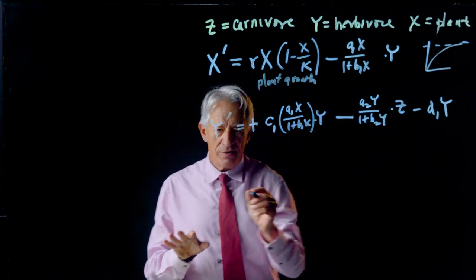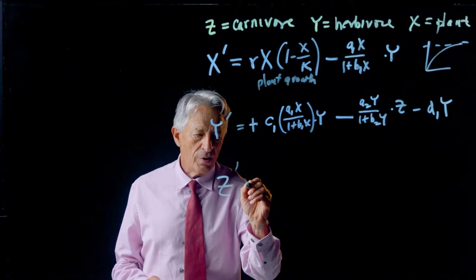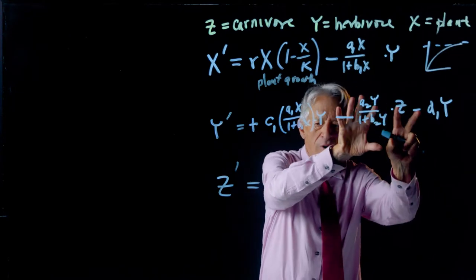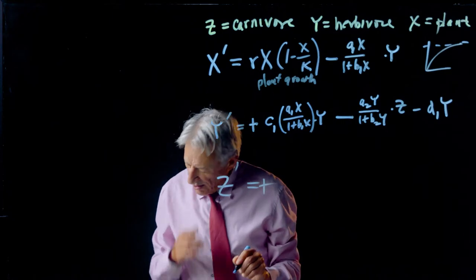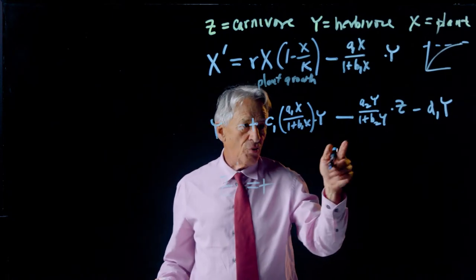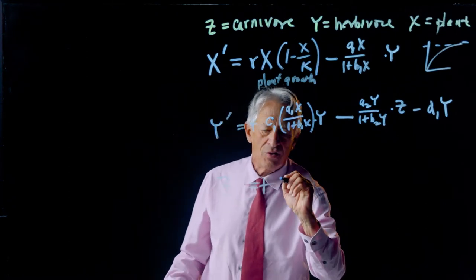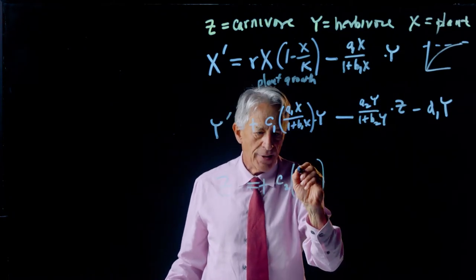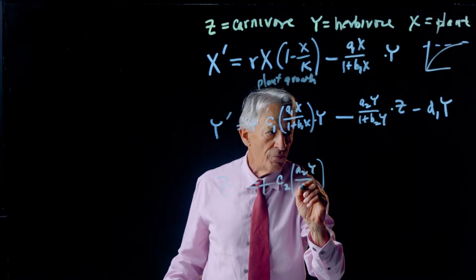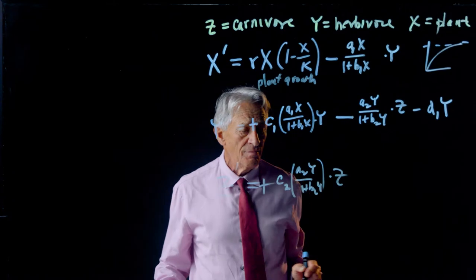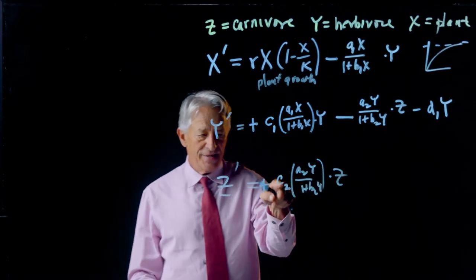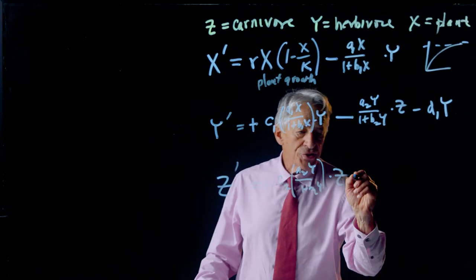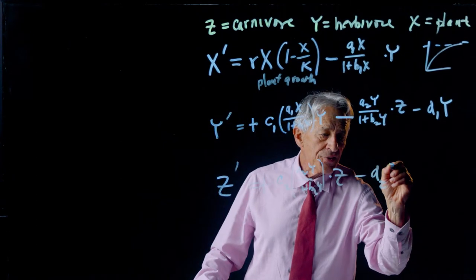So you see how this is working. Now we want our carnivore differential equation. And again, we've got to take the carnivore meets herbivore and add it positively to the carnivores. And, of course, how many herbivores do you need to feed one carnivore? We're going to call that C2. And then just take this whole term and put that right in there. A2Y over 1 plus B2Y times Z. So this is the positive effect on the carnivores of carnivore meets herbivore. And then we're just going to have a natural death term. And that's going to be D2Z.